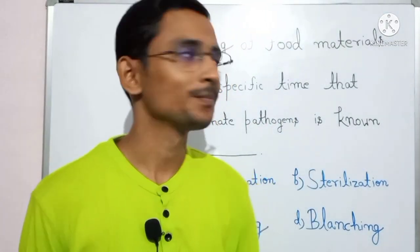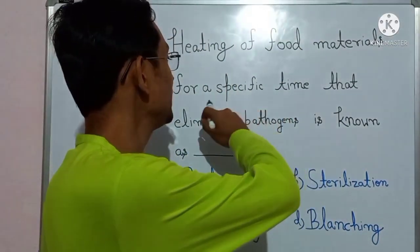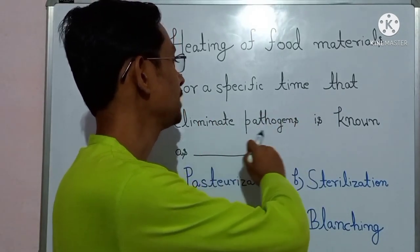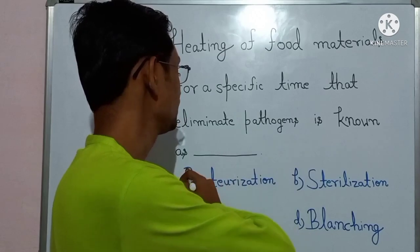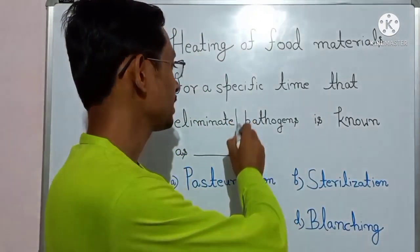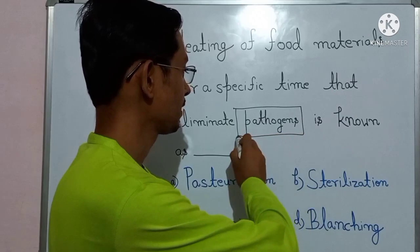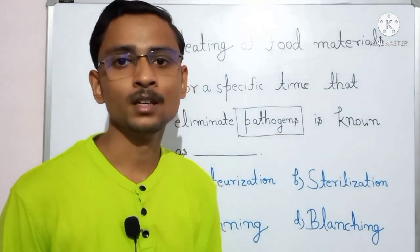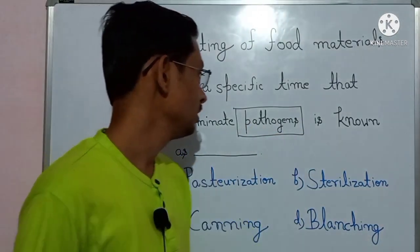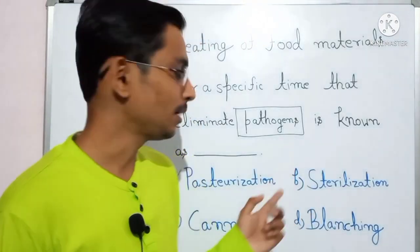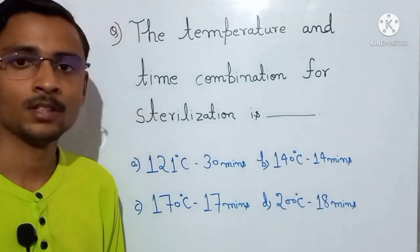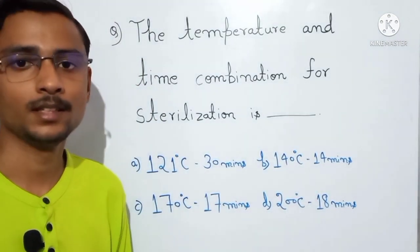The question says: 'Heating of food materials for a specific time that eliminates pathogen is known as?' Pathogenic microorganisms are dealt with in pasteurization — so the answer is pasteurization. With just one simple keyword, the answer is found. It is that simple. Now let us look at another question.